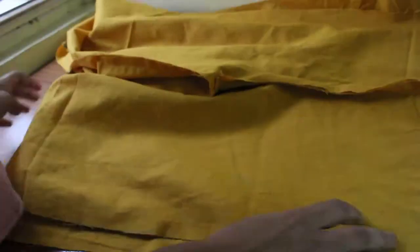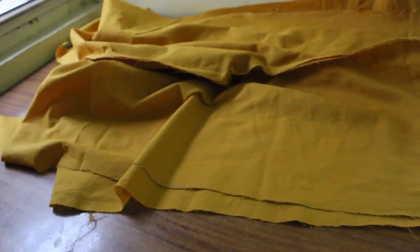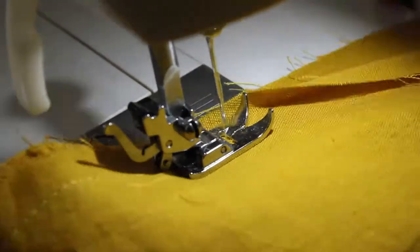This is how it will look. Next step is to stitch the sides. You can always take extra seam allowance if you are not sure about the measurements.